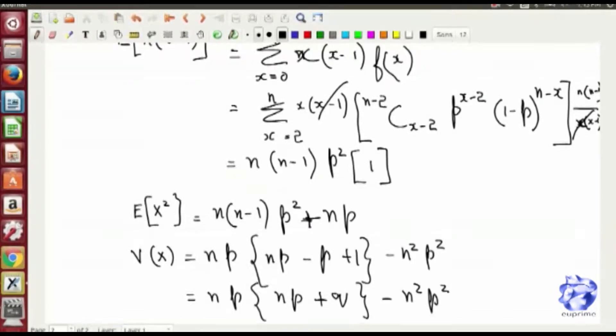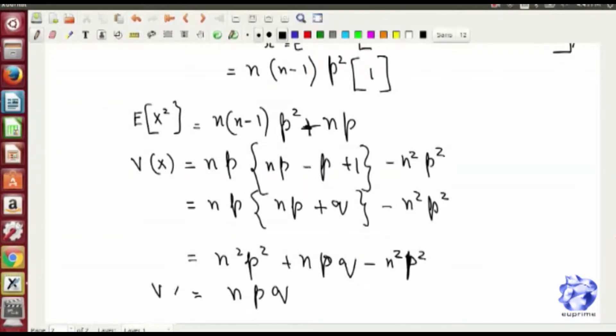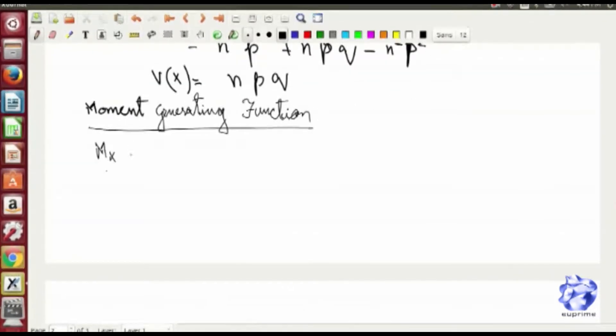So the whole right hand term evaluates out to be equal to 1. Now you add this term with expected value of X, which results in np times (np minus p plus 1) minus n squared p squared. Simplify this further—couple of terms cancel out and you have variance term equal to npq.